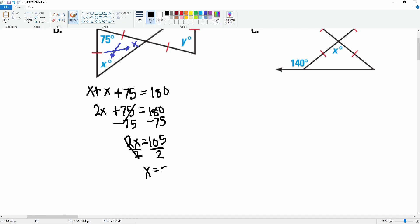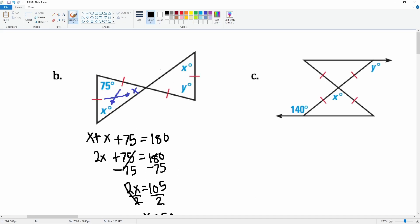Now we know that this is 52.5, so this is also 52.5, leaving you that this side is also 52.5. Then this is by default the last one that we were trying to solve for y.